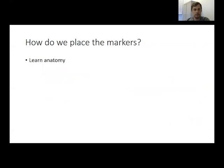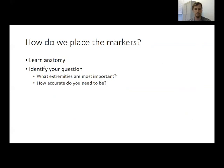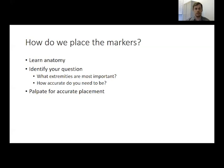So how do we place the markers? The most important thing is learning anatomy very well so we know where each marker should be placed. Once we have a good understanding of human anatomy, we identify the research question — which extremities are most important? For studying walking, we need good coverage of the legs, but for grasping you might put more markers on the fingers, or for reaching, more on the arms. We also consider how accurate we need to be, which depends on the size of movements being studied. We palpate for accurate assessment, placing markers on bony landmarks so they track the underlying skeleton rather than moving with skin or muscle.